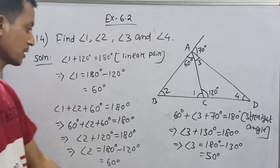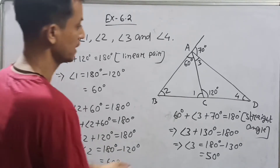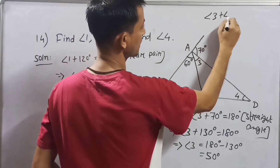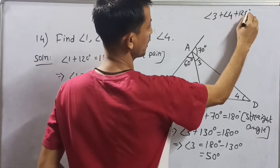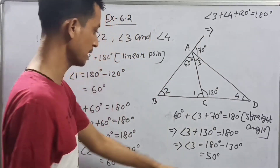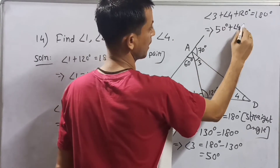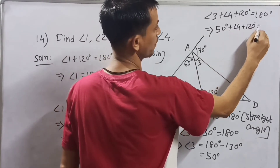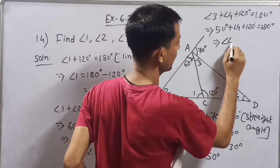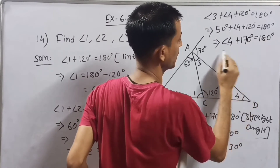Angle 3 plus Angle 4 plus 120 degrees is equal to 180 degrees. Therefore, Angle 4 is equal to 180 degrees minus 170 degrees, which is equal to 10 degrees.